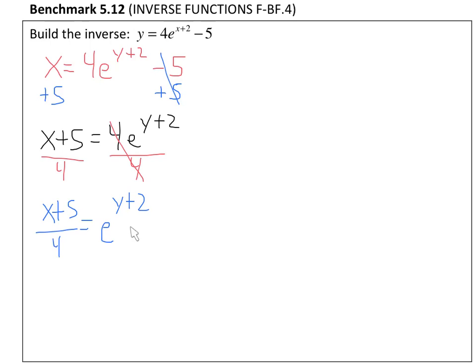Now to solve this, I like to get the exponent on the left side, so I'm going to rewrite this by flip-flopping it. e^(y+2) = (x+5)/4. All I did is flip these two sides.